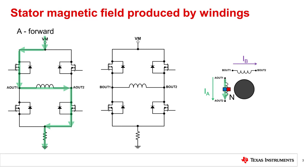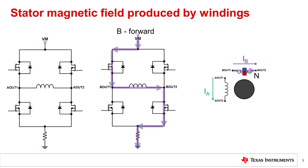When the H-bridge connected to winding A turns on one of the high side FETs and the opposite low side FET, current flows through winding A and produces a north magnetic pole. To change the polarity of this magnetic field, the driver turns these FETs off and turns on the opposite FETs. Similarly, the phase B H-bridge drives current into the phase B winding to produce a second magnetic field in the stepper.